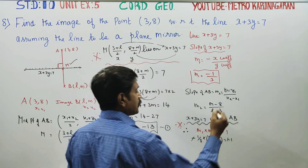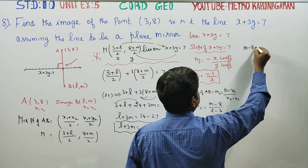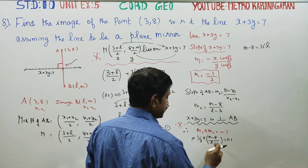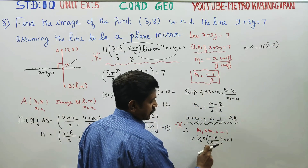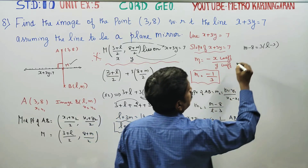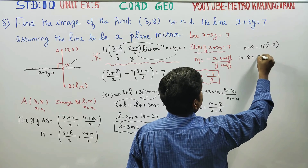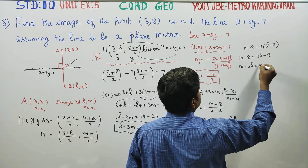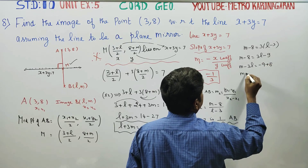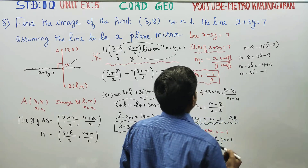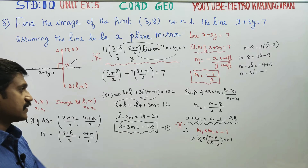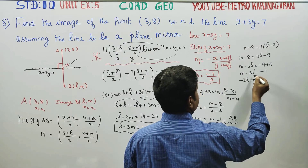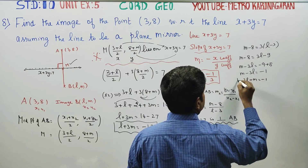The negatives cancel. Cross multiplying by 3: M minus 8 equals 3 times (L minus 3), which gives M minus 8 equals 3L minus 9. Rearranging: M minus 3L equals minus 1. This is equation number 2.